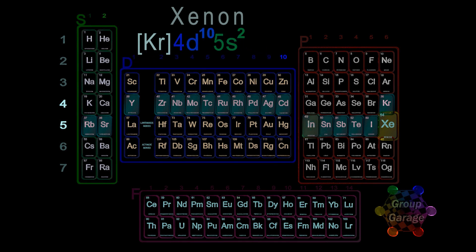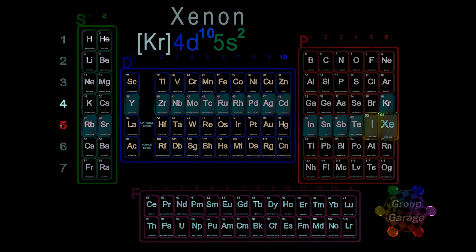All six elements indium through xenon will give us 6 electrons filling the table's P block. So we write the period number 5, followed by the number of electrons in the P shell, P6.